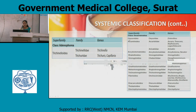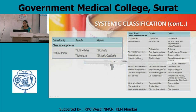Oxyuroidea: family is Oxyuridae and genus is Enterobius. Ascaridoidea: family is Ascarididae and genus includes Ascaris, Toxocara, Baylisascaris, and Lagochilascaris. Ancylostomatoidea: family is Ancylostomatidae and genus is Ancylostoma and Necator. Rhabditoidea: family is Strongyloididae and genus is Strongyloides. Strongyloidea: family includes Oesophagostomum and Ternidens genus. Syngamoidea: family and genus is Mammomonogamus.